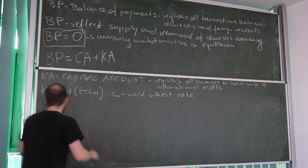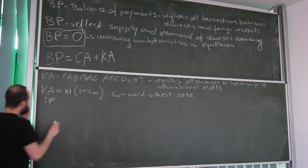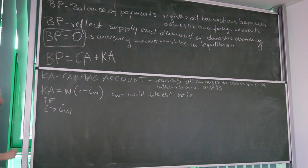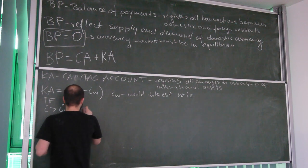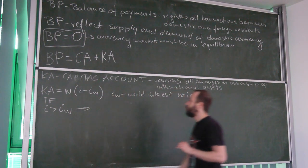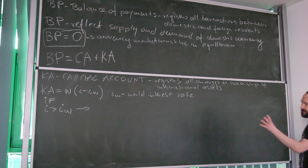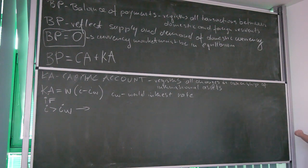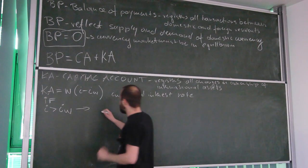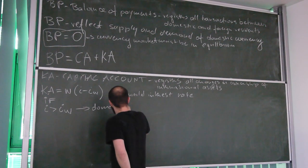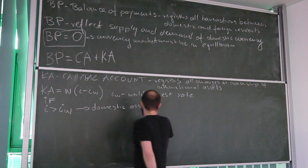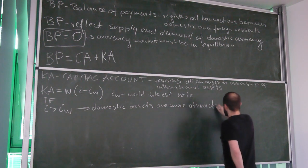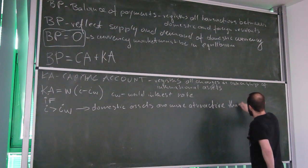Let's consider three cases. If the domestic interest rate is bigger than the world interest rate, then domestic assets — domestic bonds — give a higher return than foreign bonds. So in this case, domestic assets are more attractive than foreign assets.